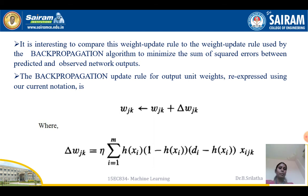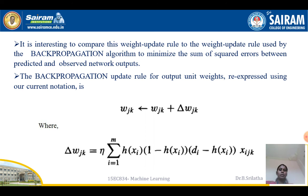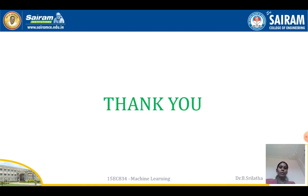It is interesting to compare this weight update rule to the weight update rule used by the backpropagation algorithm. Backpropagation is more accurate than other algorithms, so we select it to minimize the sum of squared errors between predicted and observed network outputs. The backpropagation algorithm updates the output unit weights in the same form: w_jk ← w_jk + Δw_jk. This concludes the maximum likelihood hypothesis topic. Next class we will see the remaining topics.